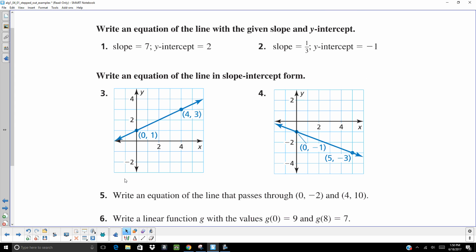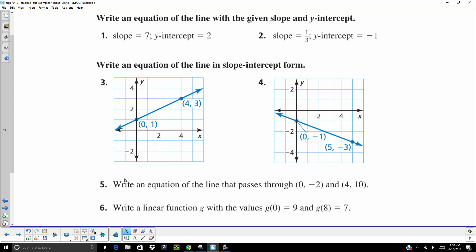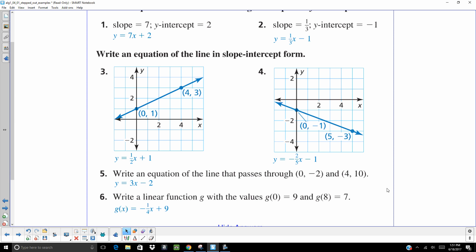All right. There are 6 problems here. I would suggest you hit pause. Try these 6 problems out on your own. When you think you've got the answers, hit the play button and check yourself. Y equals 7x plus 2. Y equals 1 third x minus 1. Y equals 1 half x plus 1. Y equals negative 2 fifths x minus 1. And that makes sense, you've got a negative slope here. You should get a negative right there as well. Y equals 3x minus 2. And y equals negative 1 fourth x plus 9.